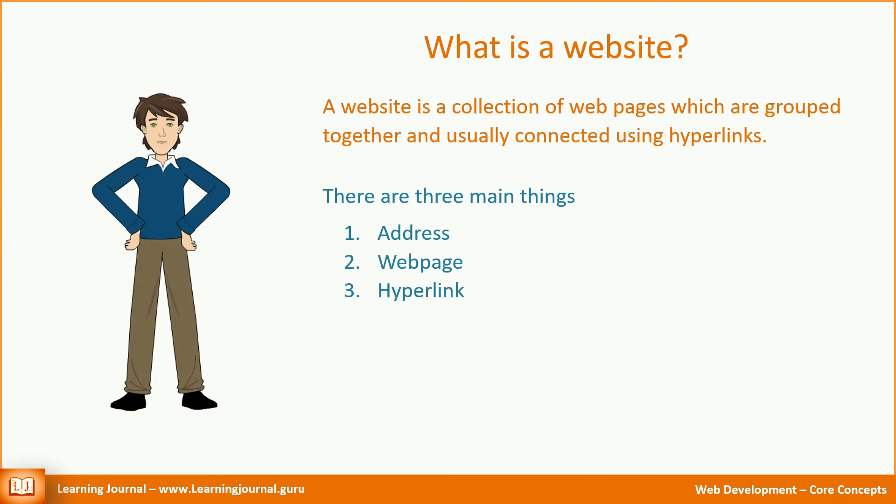I explained three things. A website is a collection of one or more web pages. Every page has a unique address — we refer to that address as the URL of the page. These pages are linked together using hyperlinks. A hyperlink is nothing but a pointer to a page URL. Moreover, that's a 10,000 feet view of a website.